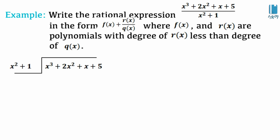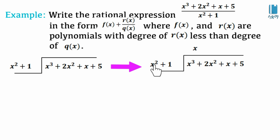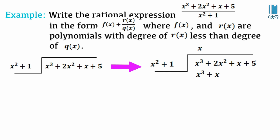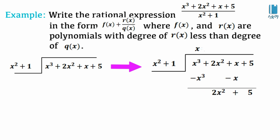We will write the rational expression x cubed plus 2x squared plus x plus 5 over x squared plus 1 in the form f(x) plus r(x) over Q(x), where r(x) has degree less than Q(x). To do this, we perform long division: divide x cubed plus 2x squared plus x plus 5 by x squared plus 1. Looking at the leading term x cubed, we divide by x squared to get x. Then x times x squared plus 1 gives x cubed plus x. Subtracting: x cubed minus x cubed is zero, and x minus x is zero, leaving 2x squared.